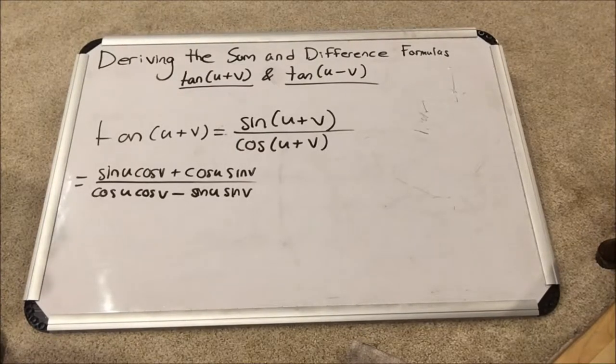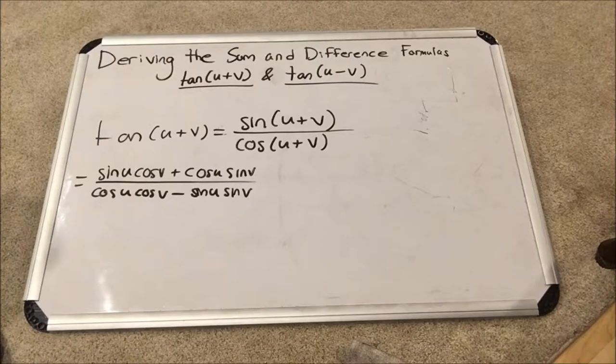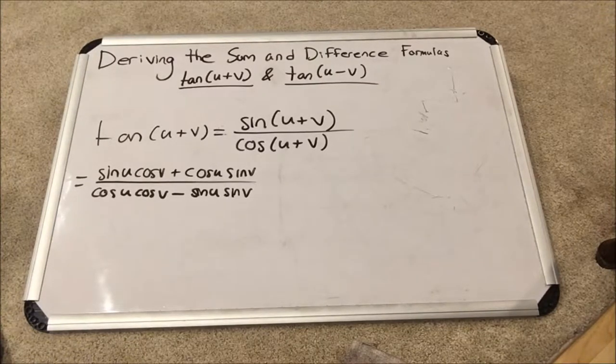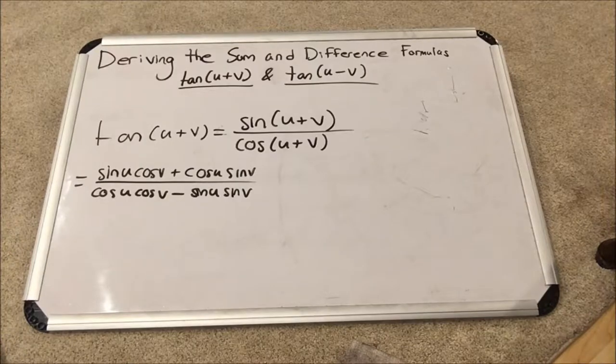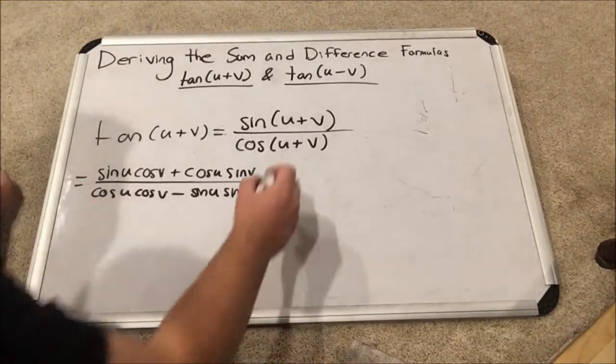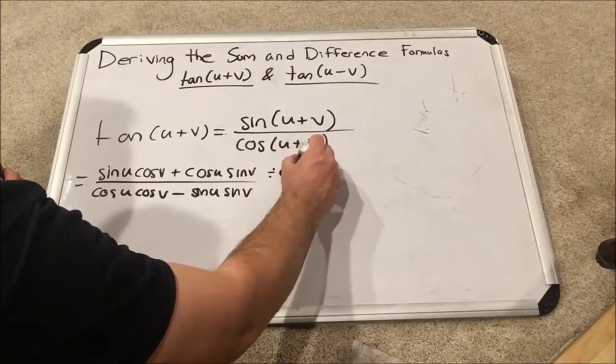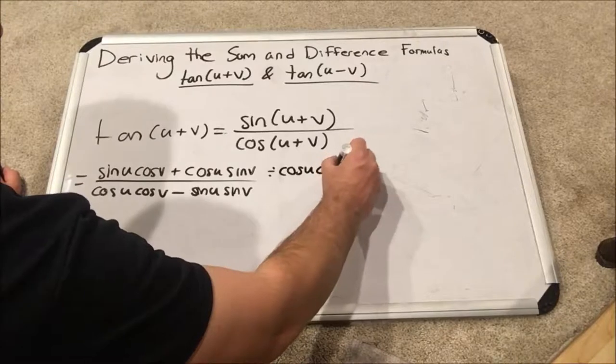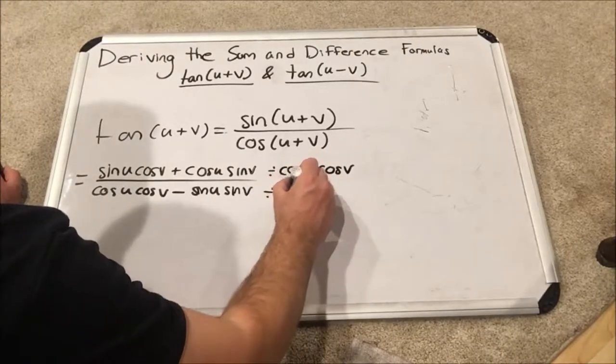Now, the only unintuitive part in this process is what I am going to do right now. I am going to divide both the numerator and denominator by the following product: cosine u cosine v. So both the numerator and denominator will themselves become fractions with cosine u cosine v as their denominators.